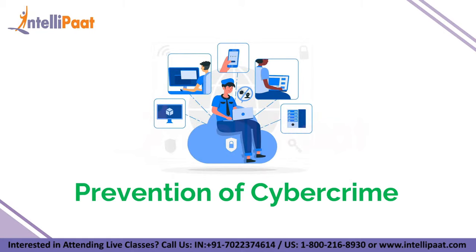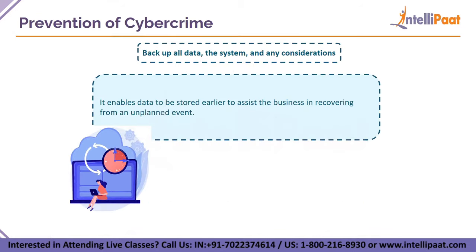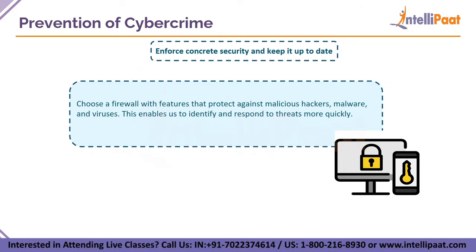Tips to prevent cybercrime: the first tip is to back up all data. This enables data to be stored beforehand to assist the business in recovering from an unplanned event. In the event of a disaster, one must have all data backed up to avoid serious downtime, loss of data, and serious financial loss. The second tip is to enforce concrete security and keep it up to date — choose a firewall with features that protect against malicious hackers, malware, and viruses.